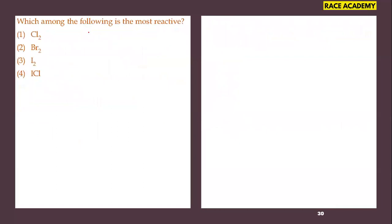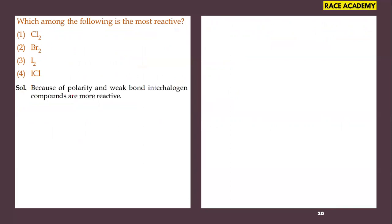Which among the following is the most reactive element? Halogens and an interhalogen compound are given as options. Due to their polarity and weak bonds, interhalogen compounds are said to be more reactive than halogens. So the fourth option is the right answer.